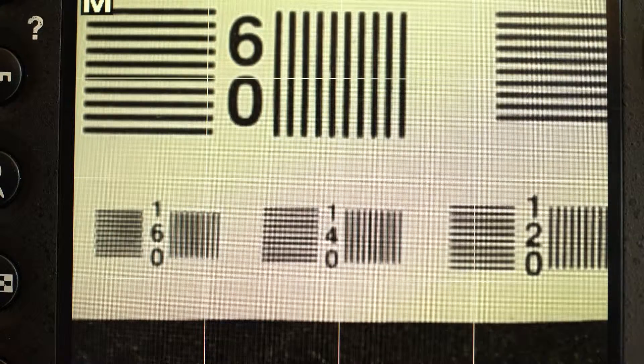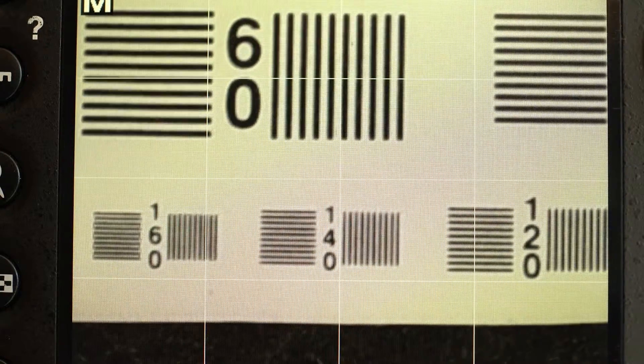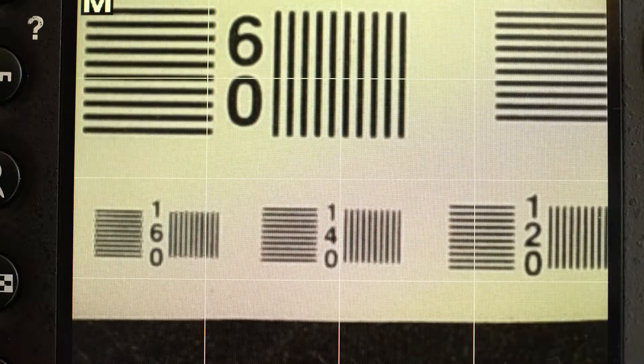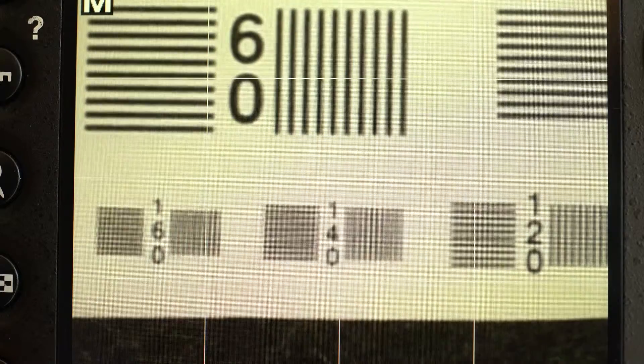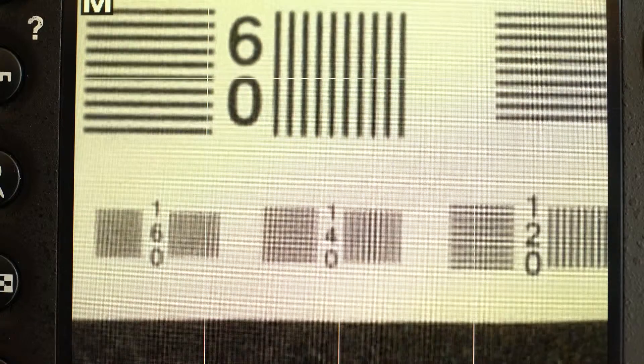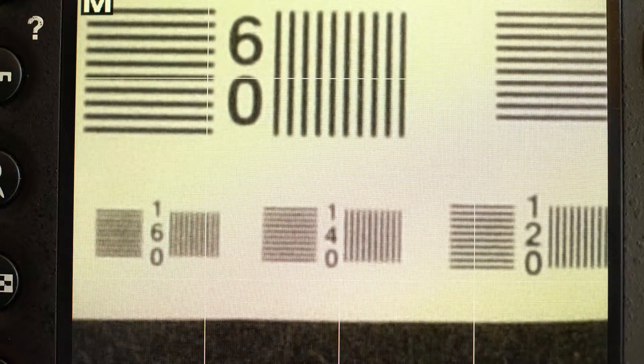Now as we stop down the lens to f8, f11, f16, f22, you can see that at f22 things have gone kind of grayish, and we're losing the detail on the finest bars. Sort of there, sort of not there.